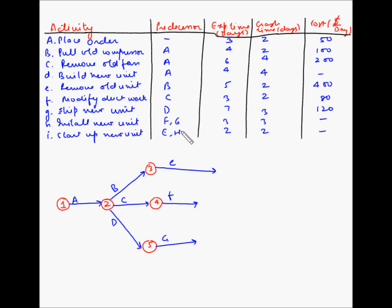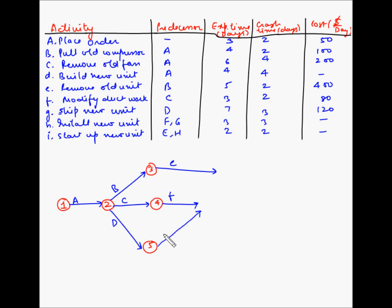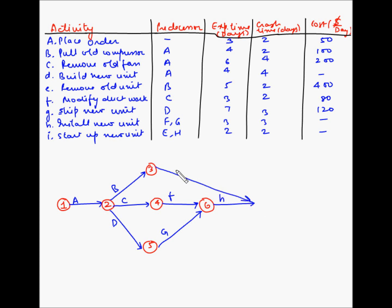Now H is dependent on F and G, so G has to merge into F. Let us modify this — we will draw G and then draw the ending node. Let us say this is node 6, and from this we can start activity H. Next, I is dependent on E and H, so E and H have to merge so that I can start. Now I will draw E, and this is the ending node number 7. From here I can start I and draw the ending node which is number 8. So this is our network diagram for the project.